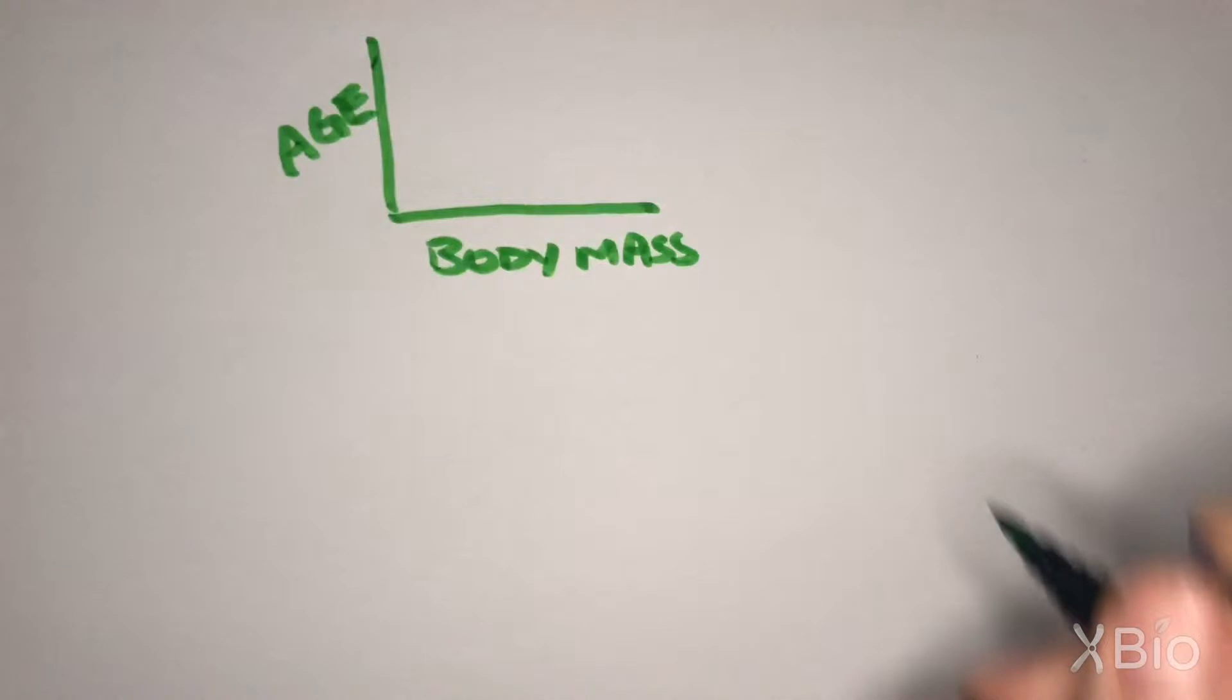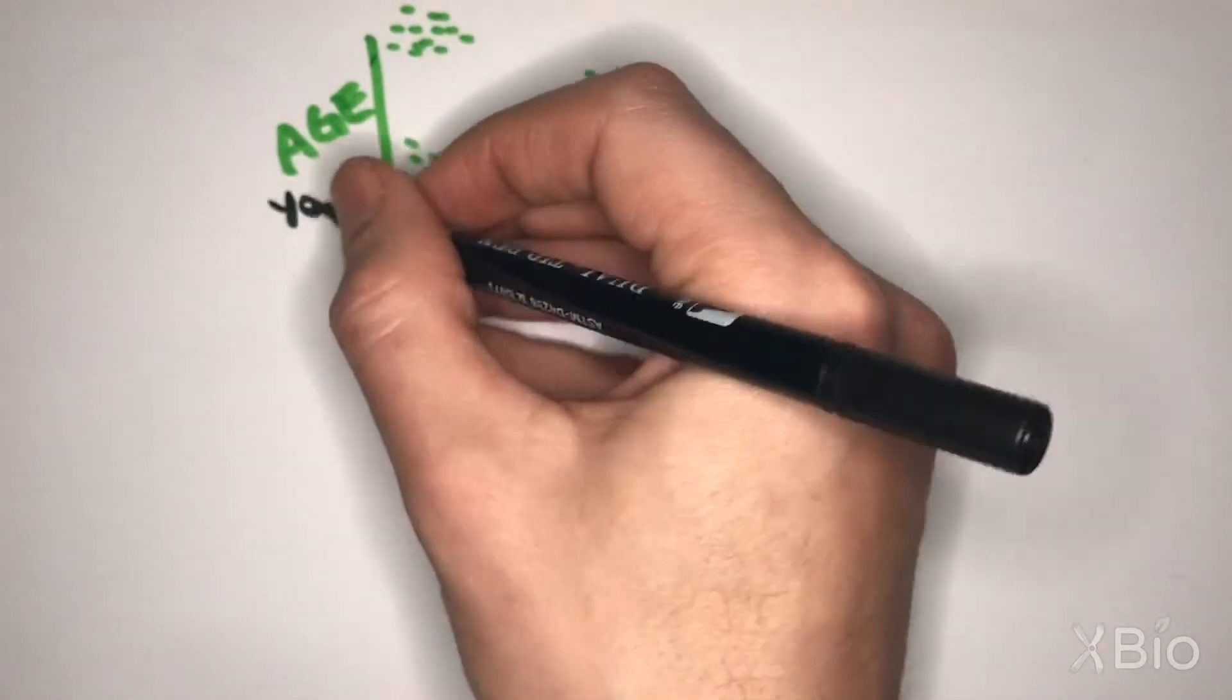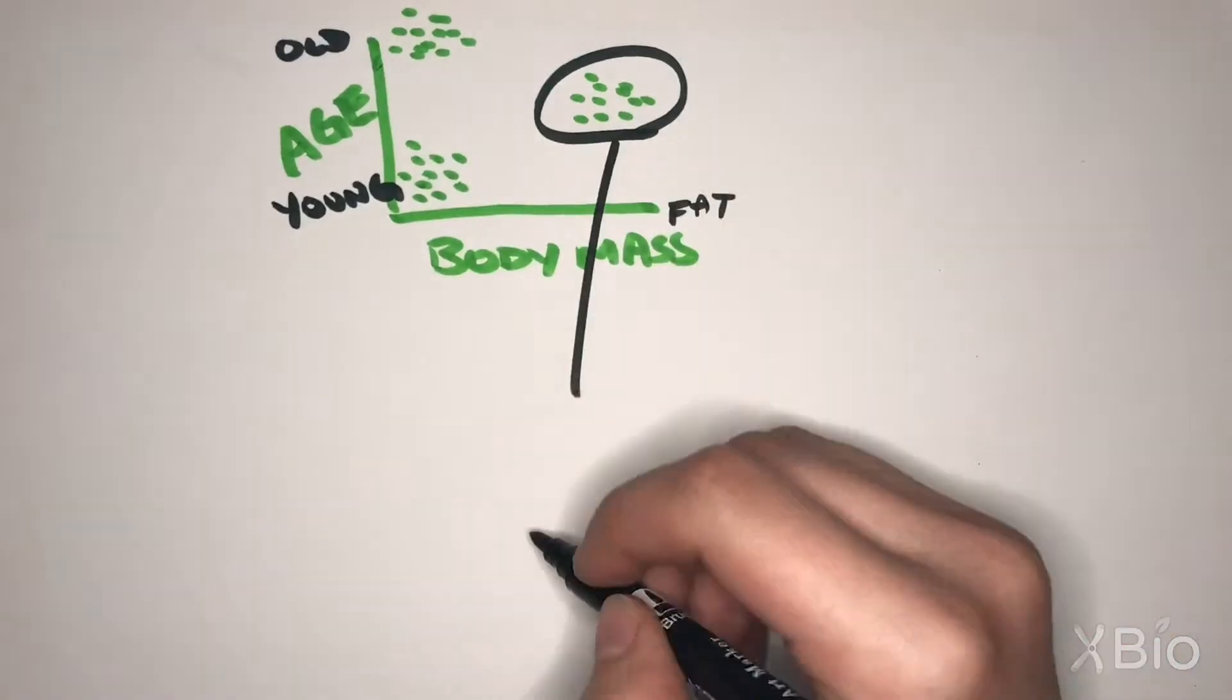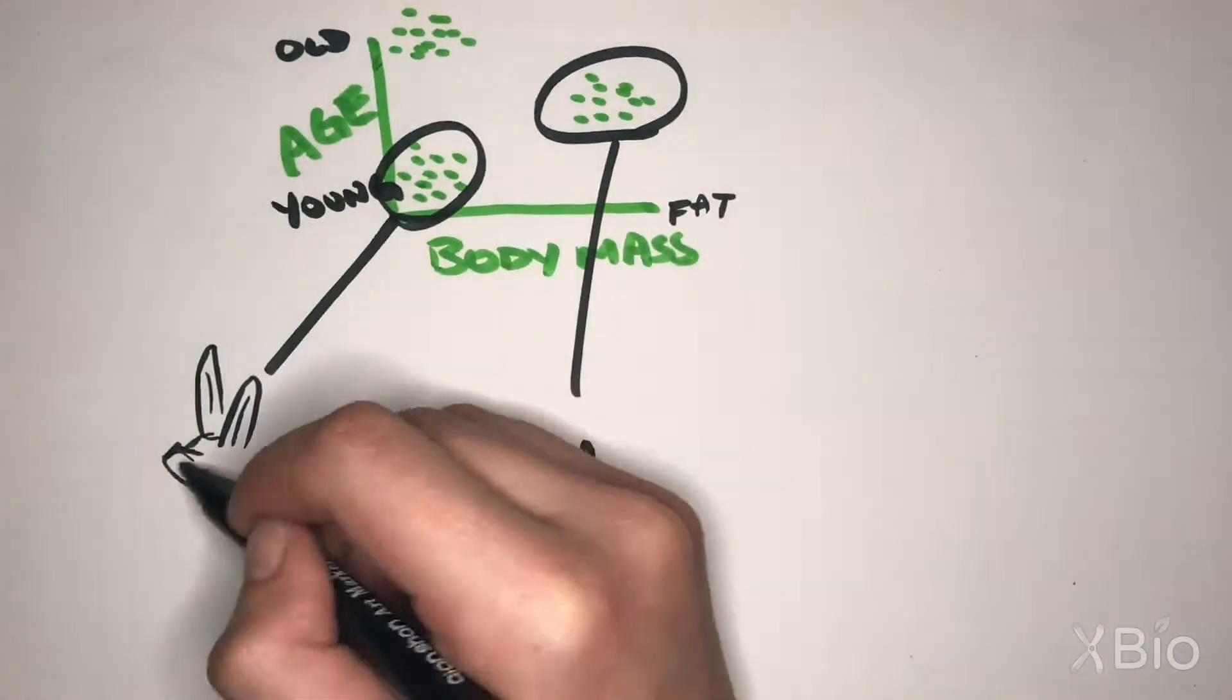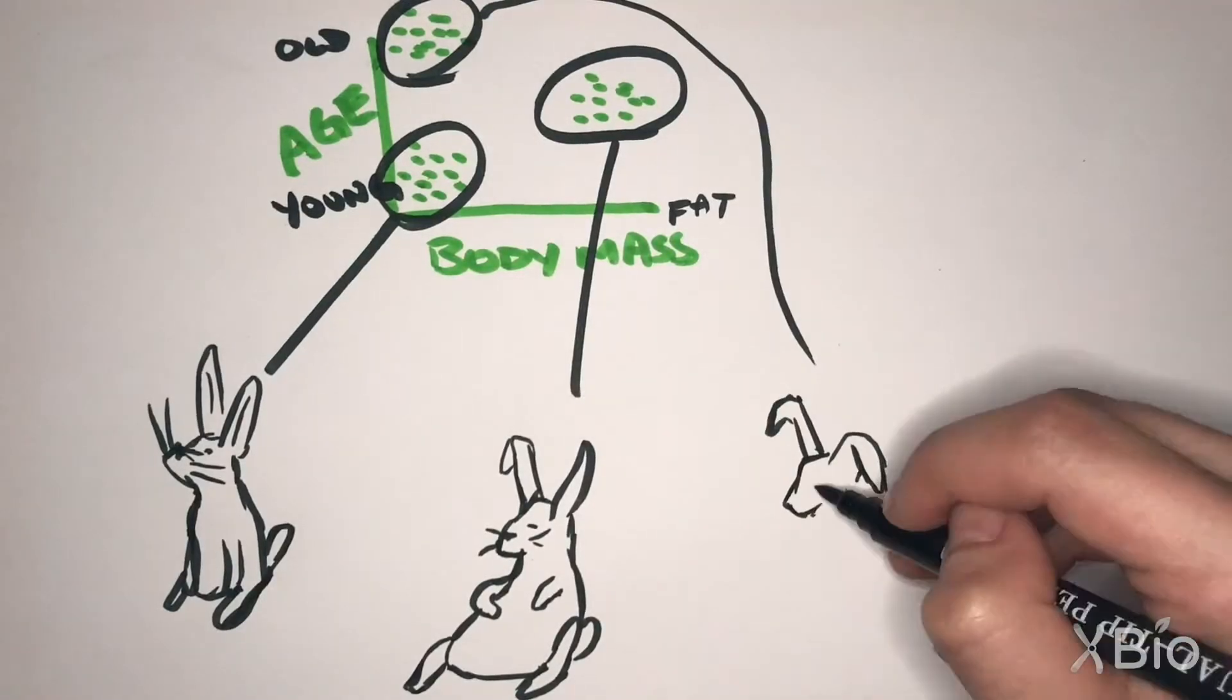Here we will examine how age on the y-axis relates to body mass on the x-axis. Now we find that fat rabbits are usually middle-aged, but there are two types of skinny bunnies: young, fast ones, and old, sickly ones.